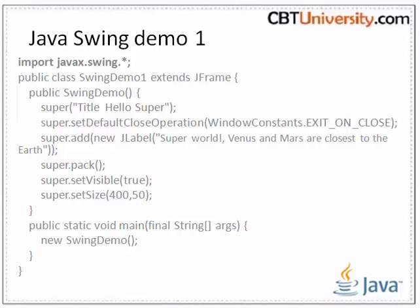It then calls the setDefaultCloseOperation method inherited from JFrame, to set the default operation when the close control on the title bar is selected to WindowConstants.EXIT_ON_CLOSE. This causes the JFrame to be disposed when the frame is closed, which allows the JVM — Java Virtual Machine — to exit and the program to terminate.